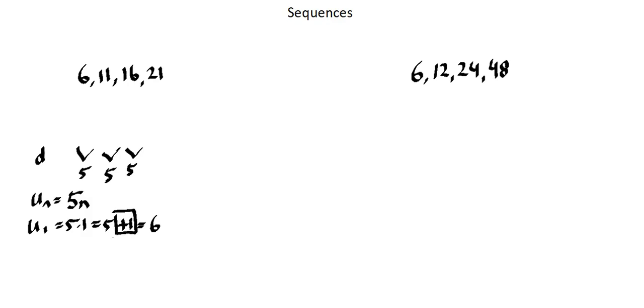And I'm going to find the same situation with all of the terms. If I apply the first rule of 5n to the second term, 5 times 2 is 10. But the second term of the sequence is 11. Again I would need to add 1.